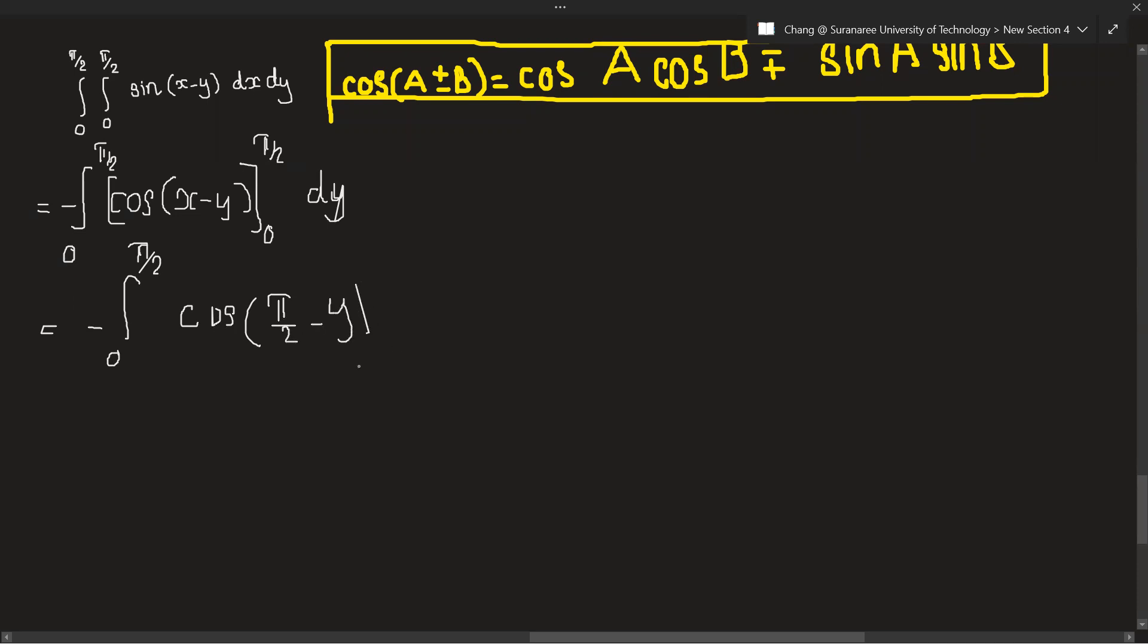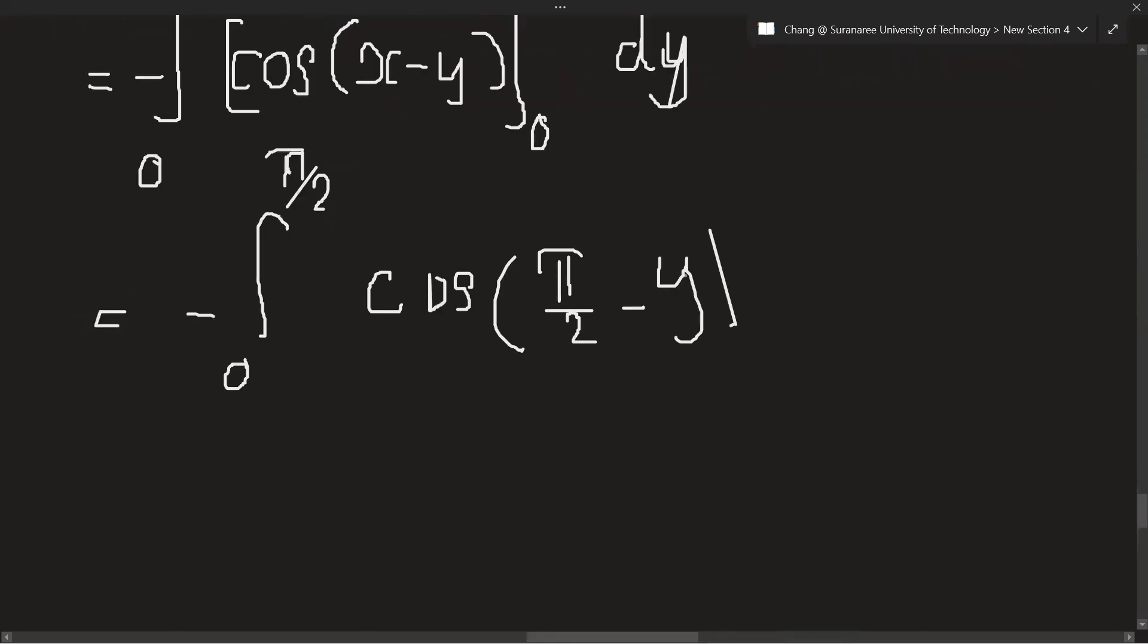Minus, this is okay, minus cos of minus 1, because when we insert 0 we will just get minus 1. All right, and we have to integrate with respect to y again.